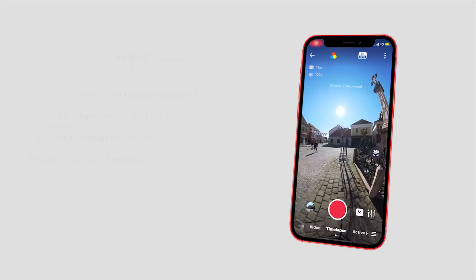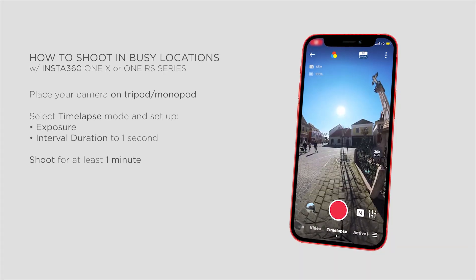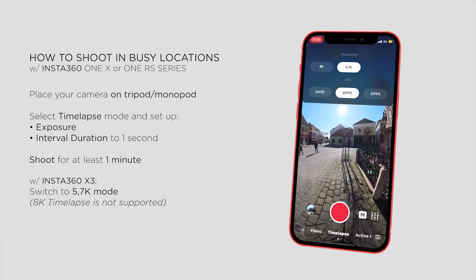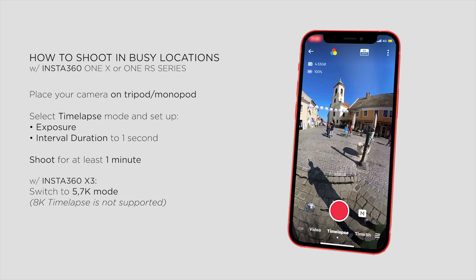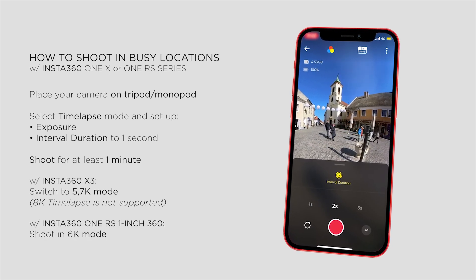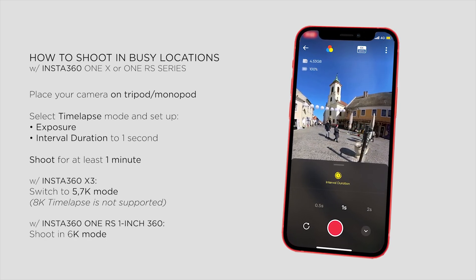You can shoot with One RS cameras, or with One X2 or X3, but it's very important that unfortunately this solution won't work with 8K timelapse on the X3. So you have to switch to 5.7K before shooting. At the same time, this means you'll get the highest resolution with the One RS 1 in 360, which allows you to shoot in 6K.